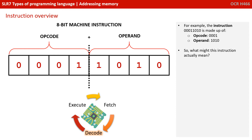For example, the instruction 00011010 is made up of an opcode 0001 and operand 1010. So, what might this instruction actually mean?